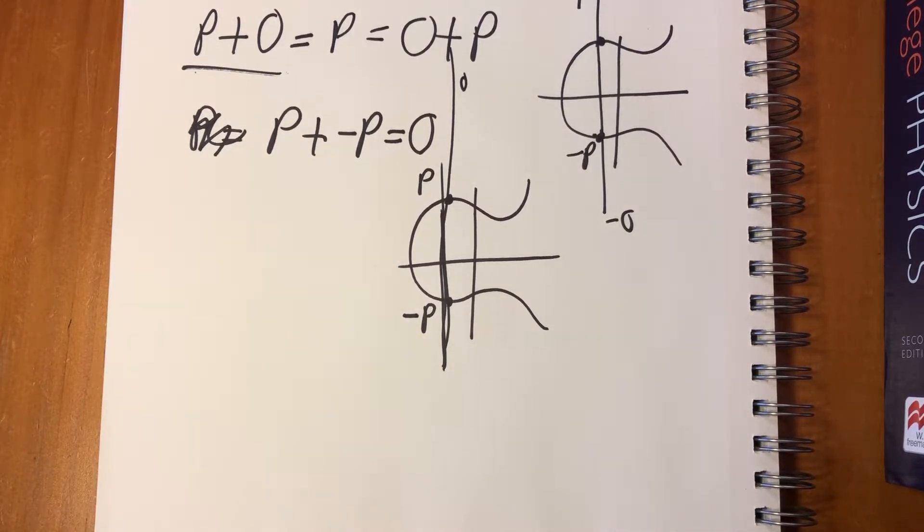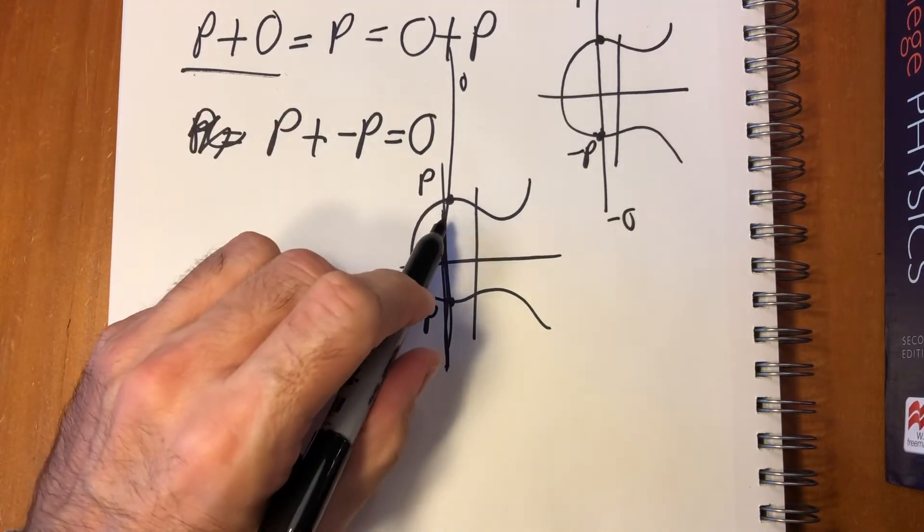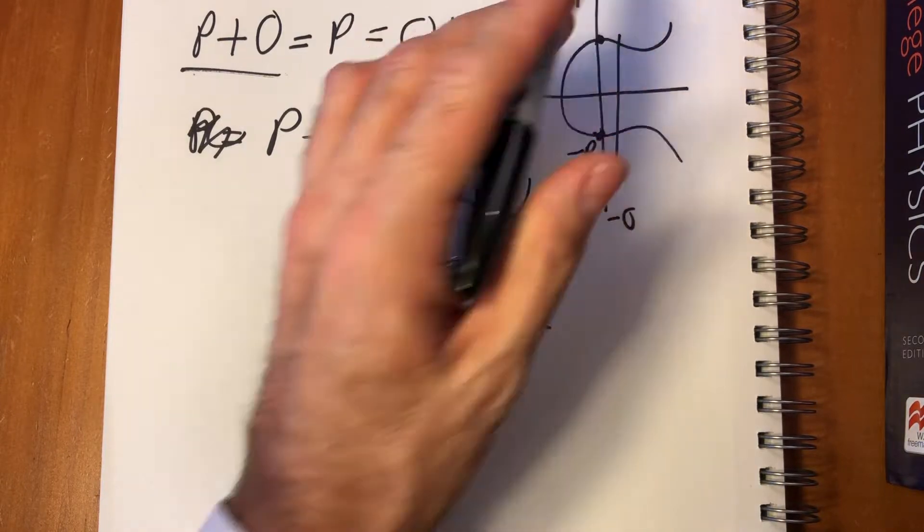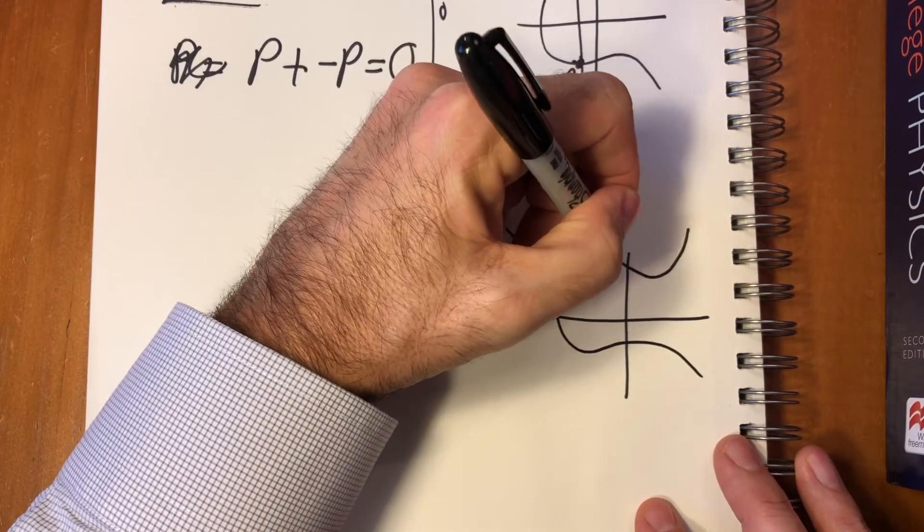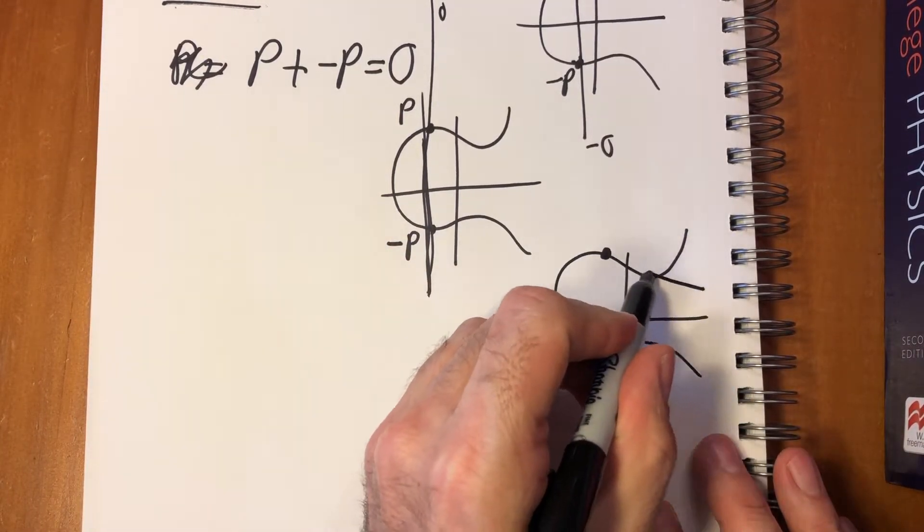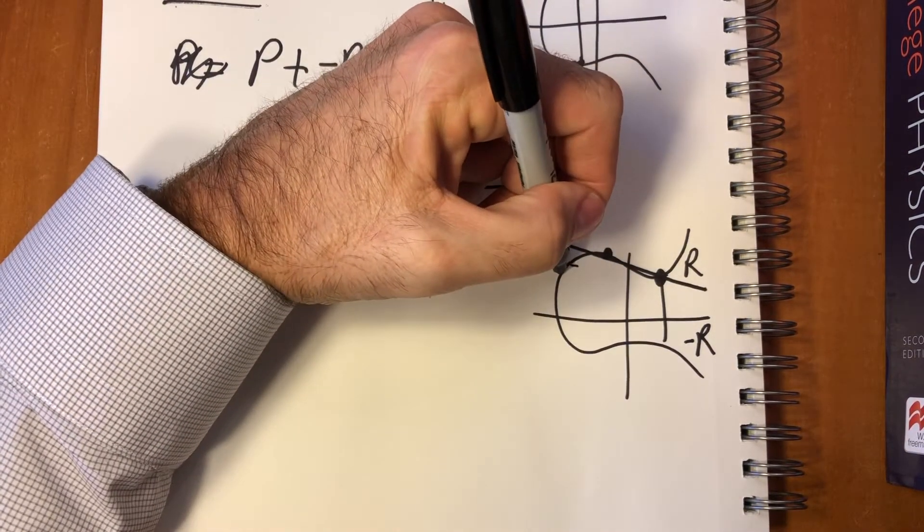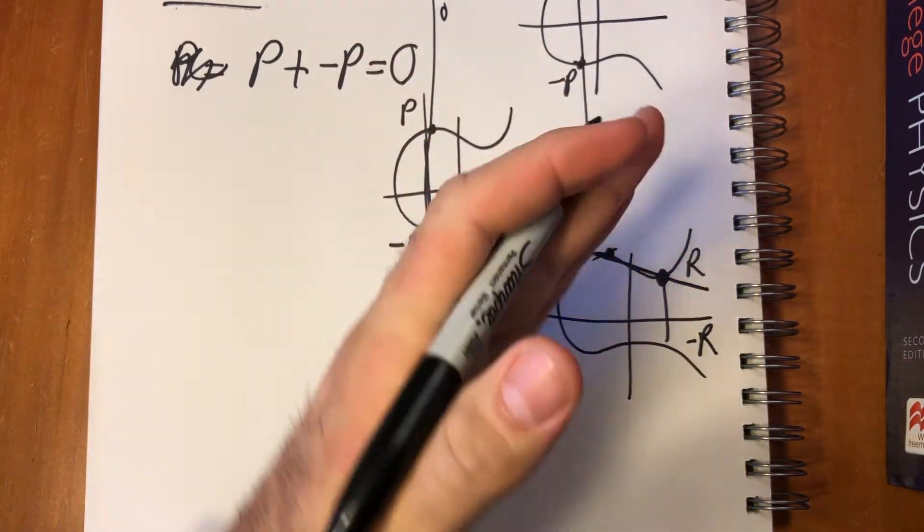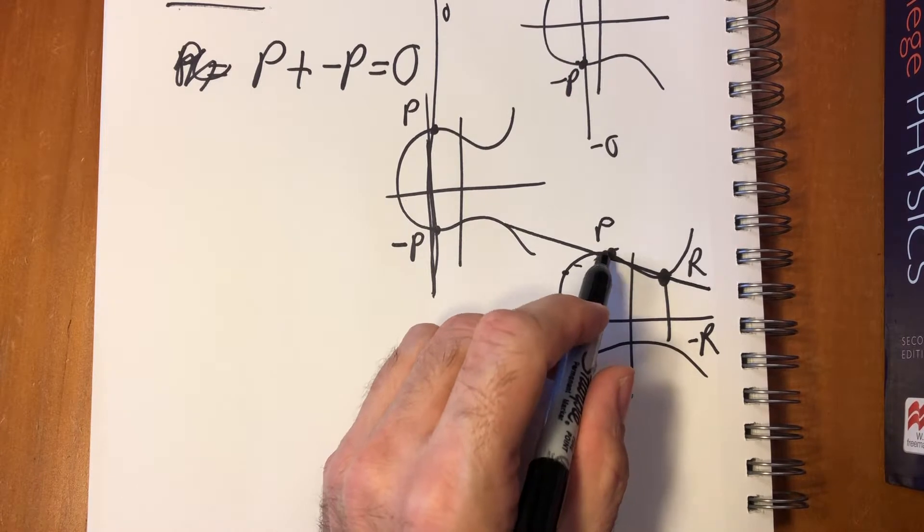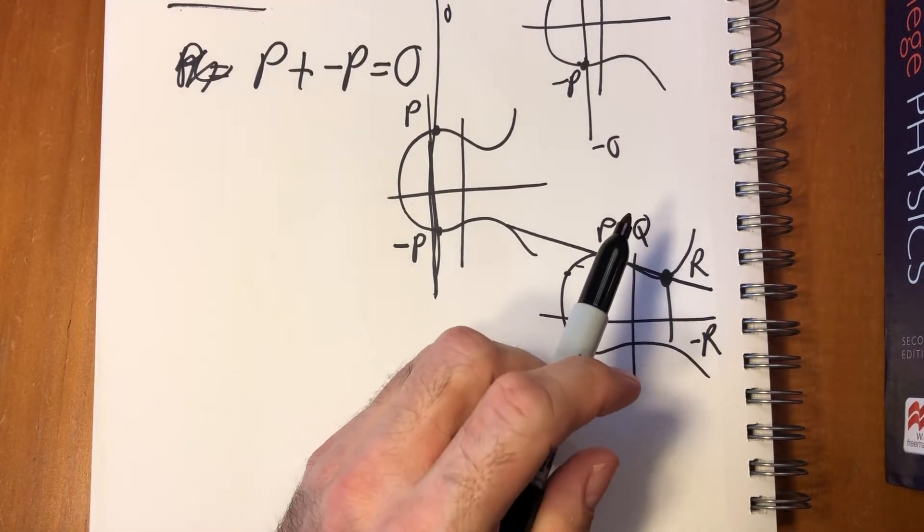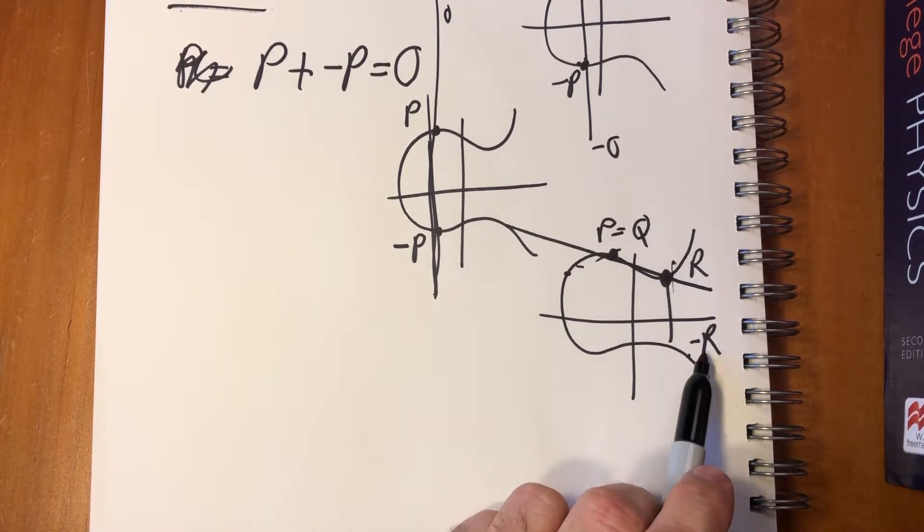We need to look through the degenerate cases where things go a little bit wrong. This works fine if P and Q are different, but if P and Q are the same, then we have to do something a little different. So if we have P and Q both right here, then what we do is we take the tangent line at that point and we'll still hit at some place R and then go down to negative R. The tangent line would be when P = Q, it's the same as 2P. You just take the tangent line and you end up at -R.